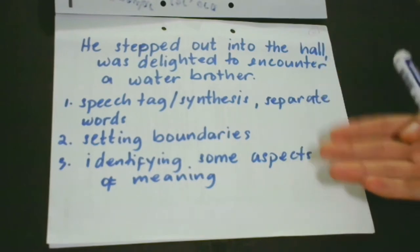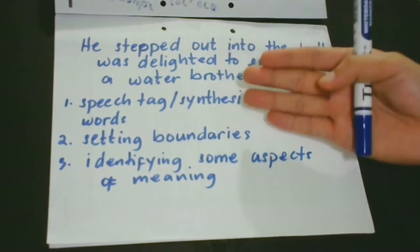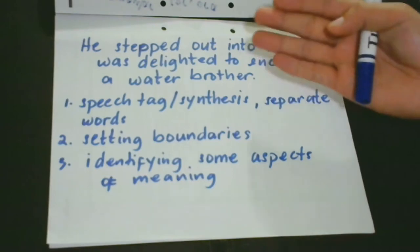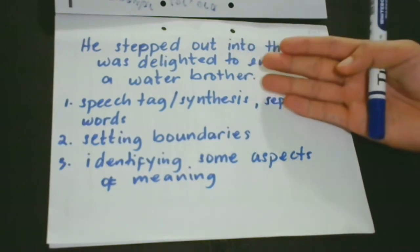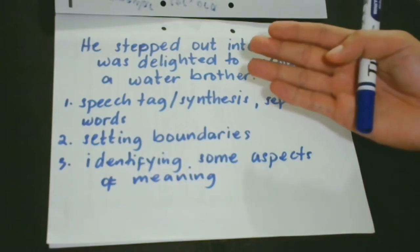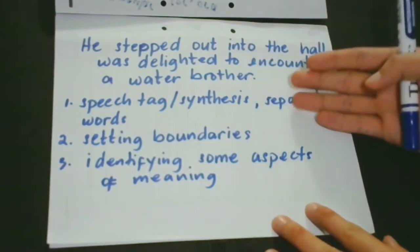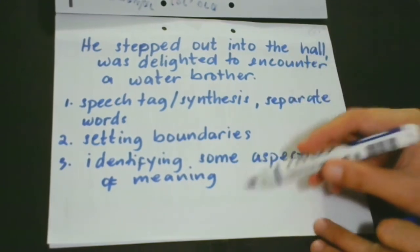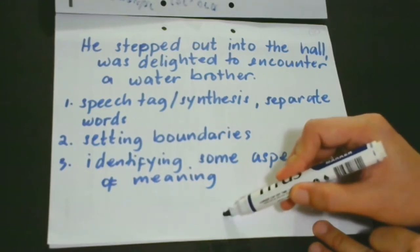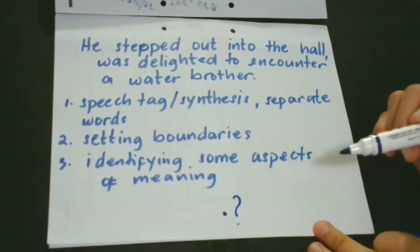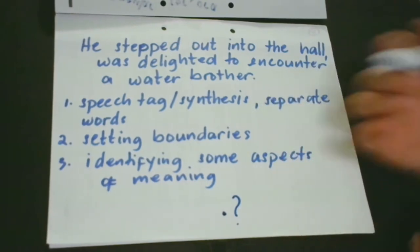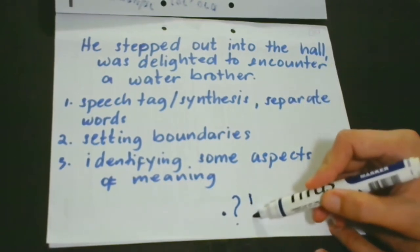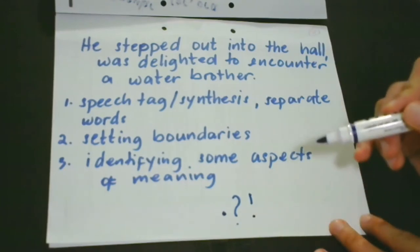The second instance is when you are setting boundaries of different ideas. We use a period to mark the end of a declarative or an imperative sentence. We use a question mark to suggest that a sentence is interrogative, and we have the exclamation point for an exclamatory sentence.